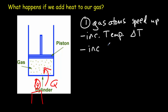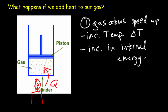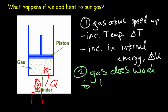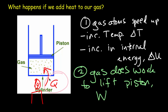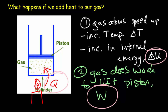So we'll have an increase in internal energy, and we use ΔU to represent that. The second thing that can happen is the piston can rise — meaning the gas is doing work to lift the piston — and we represent that work by W. Now notice that Q is an energy term (heat energy), ΔU is an energy term (internal energy), and work is in joules — that's energy as well.